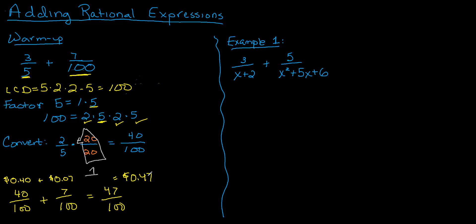These are things we've been doing for a while, and it's exactly the same step when it comes to the algebra. I'm going to find the least common denominator. To do that, I need to factor each of my denominators. The first denominator is x plus 2. I can't break that down any further.